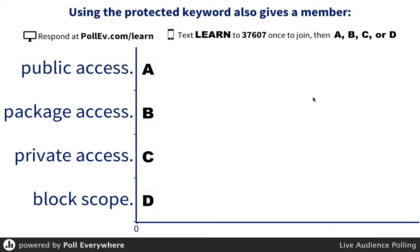Here is the last one, and then we'll break. Using the protected keyword also gives a member: A, public access. B, package access. C, private access. D, block scope.